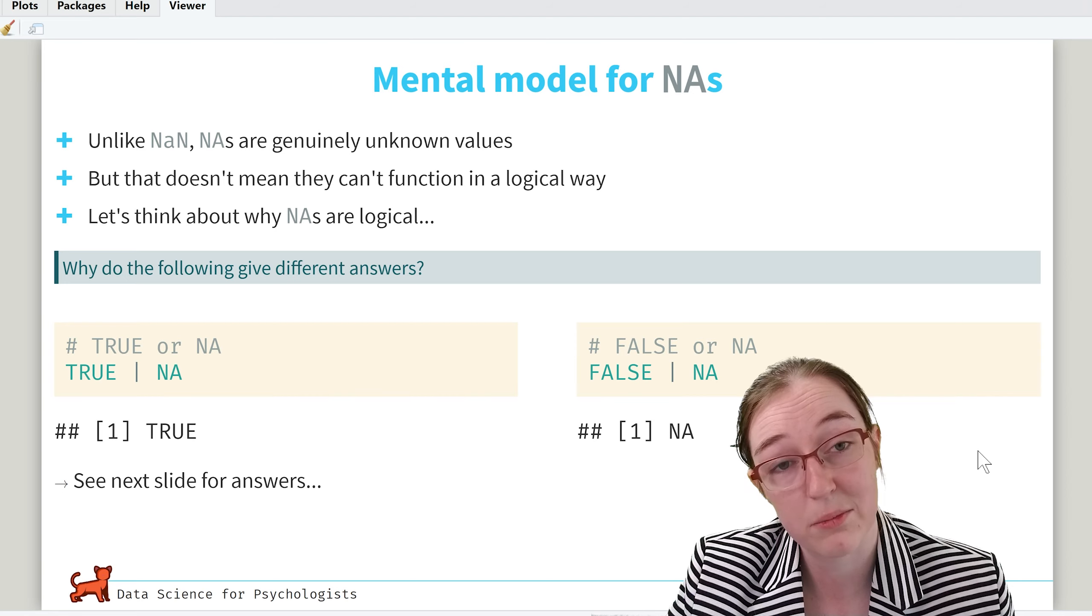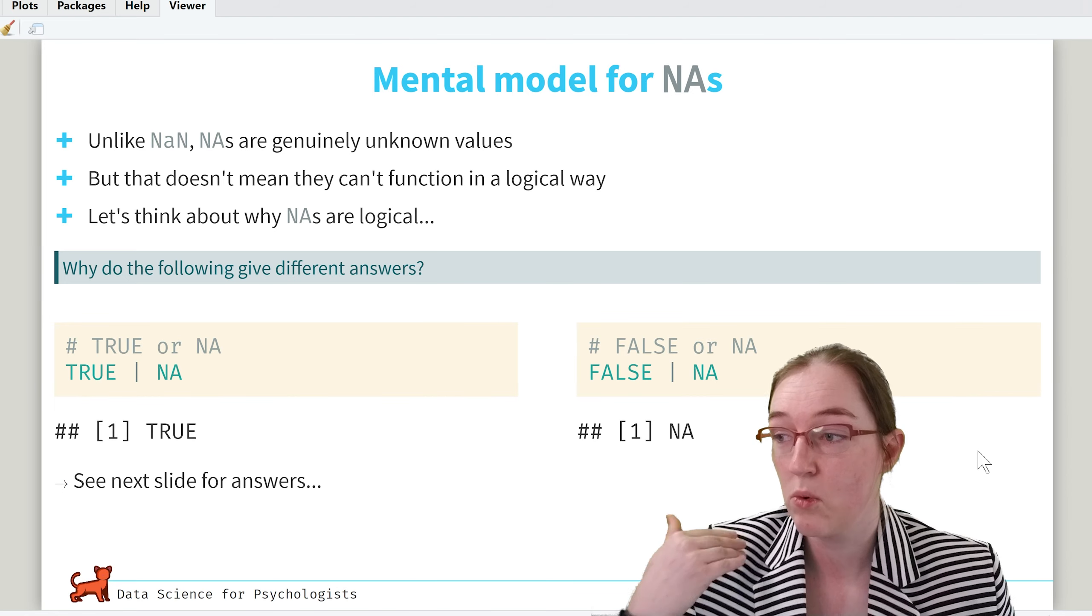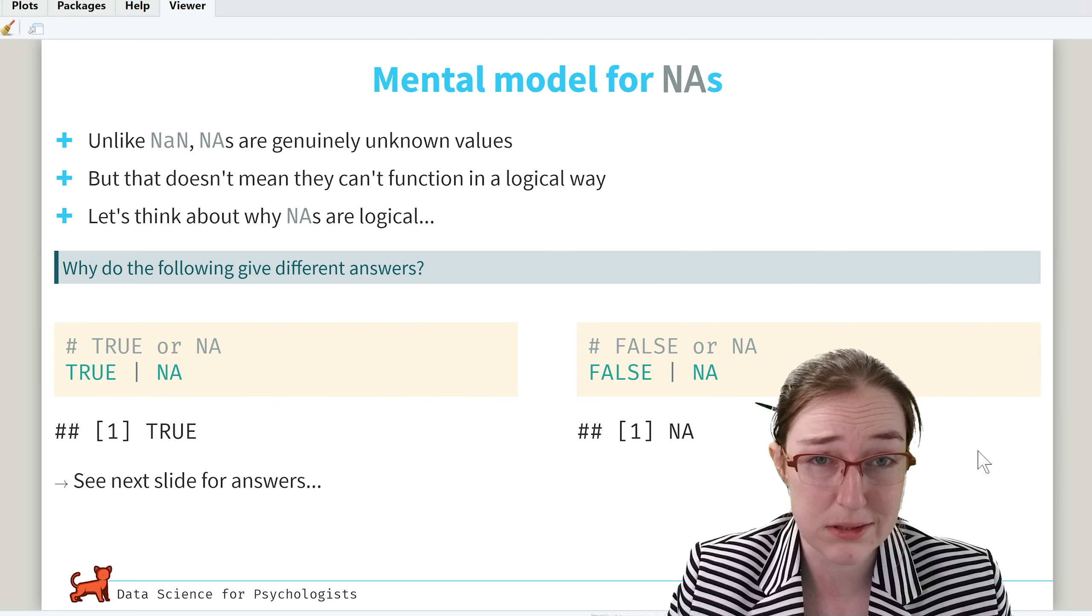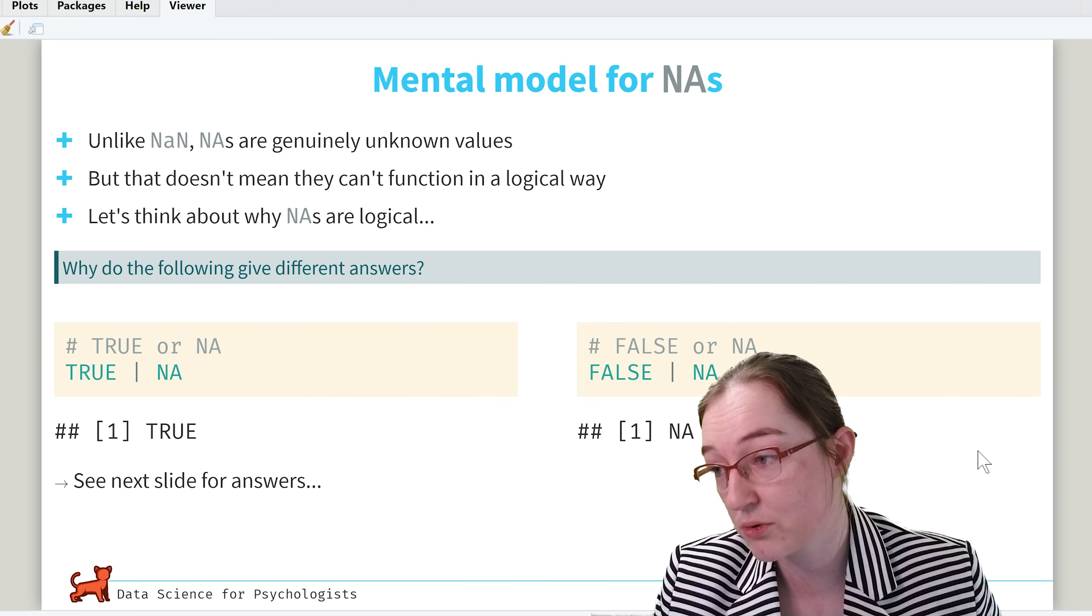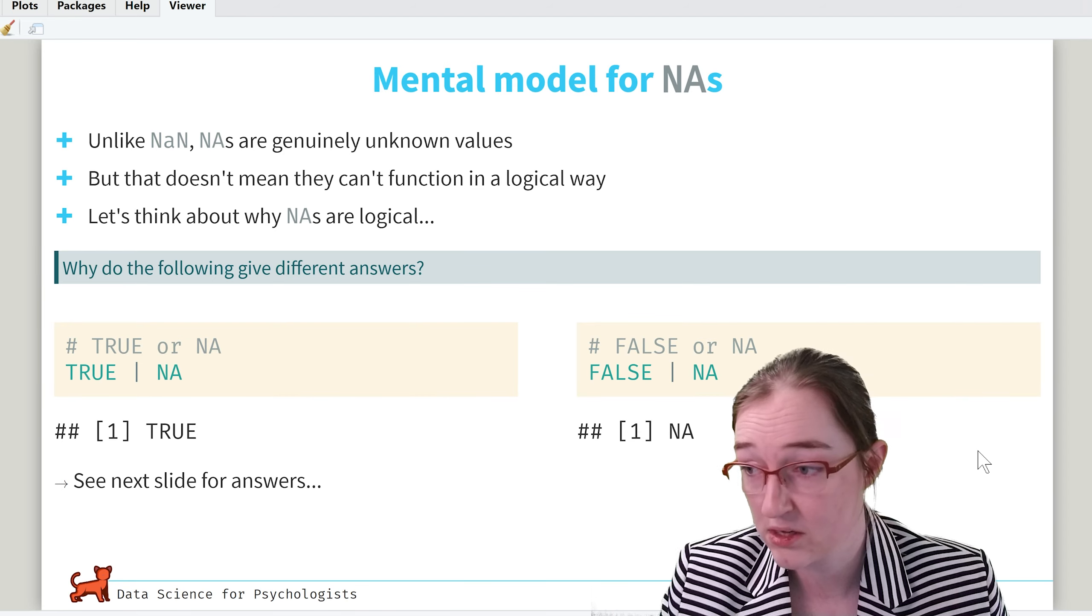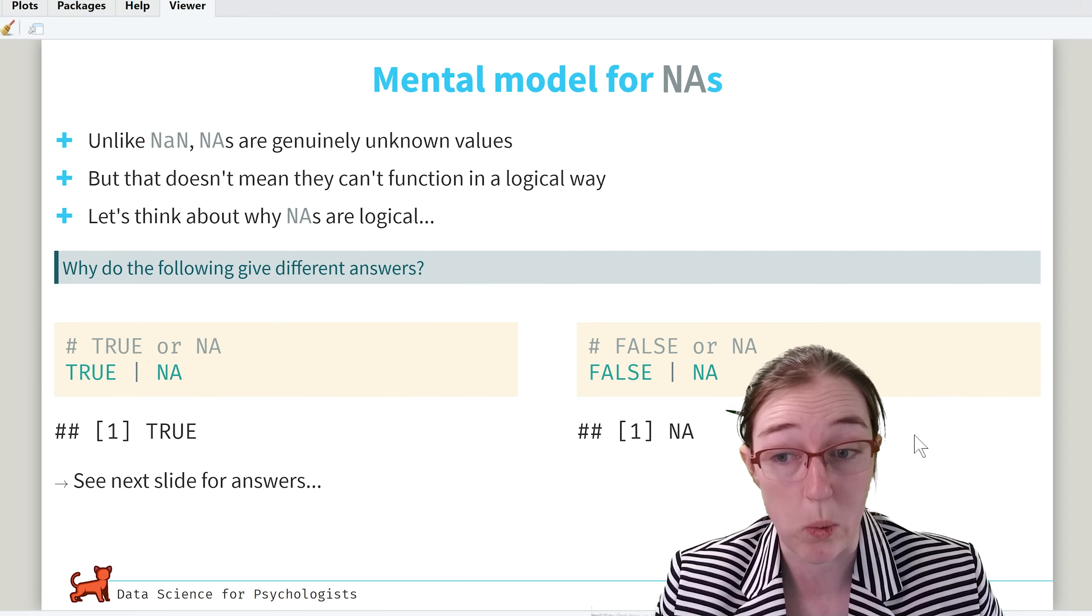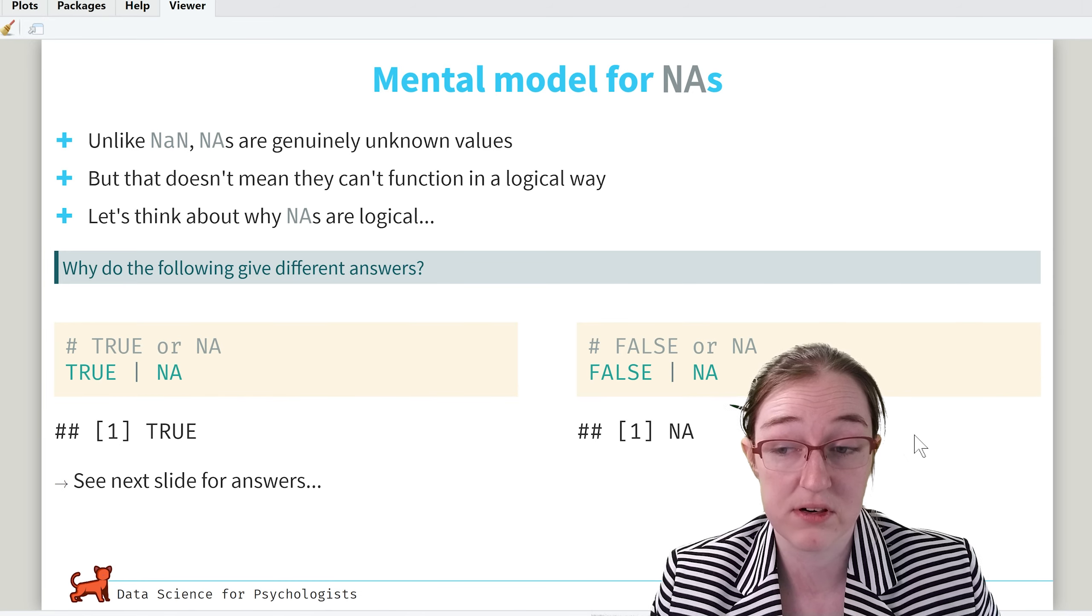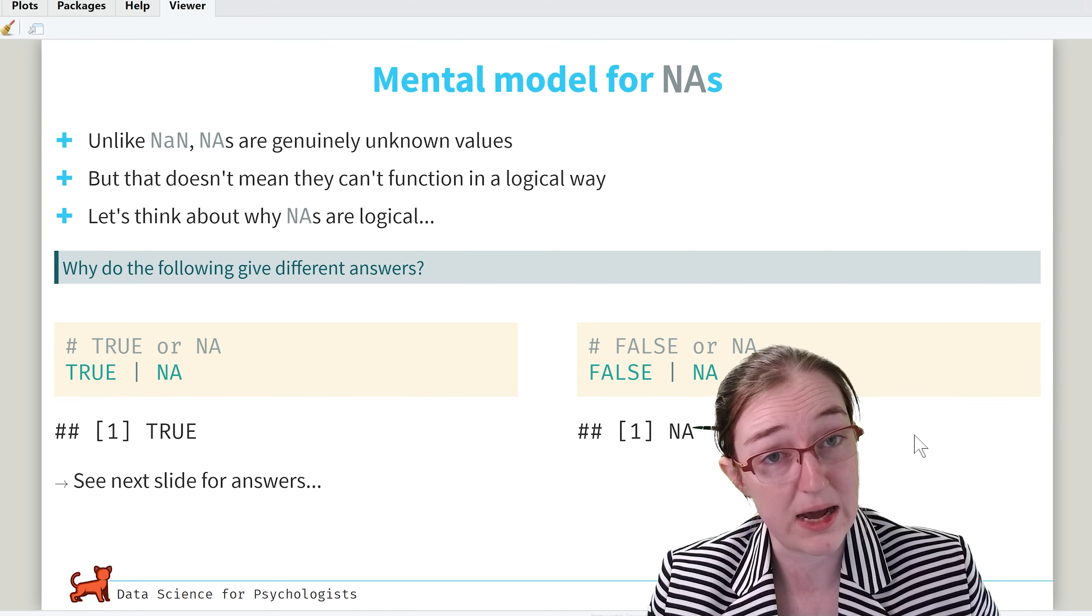So let's think about why NAs are logical. And I am going to leave that as a question for you, dear reader. So why do the following two results give us different answers? Here we have TRUE or NA, where the output is TRUE, versus FALSE or NA, where the output is NA.